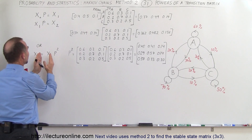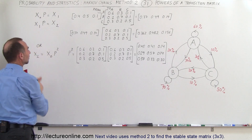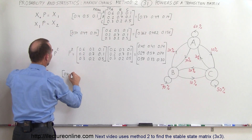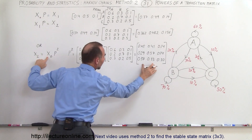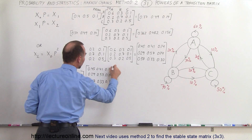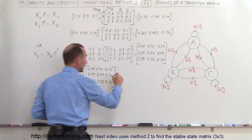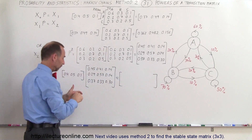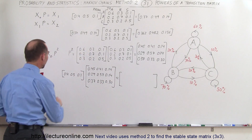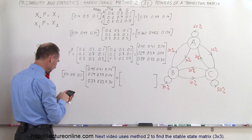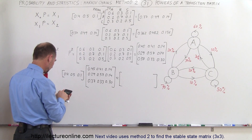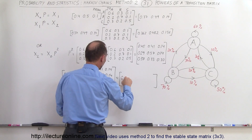Now we can show that multiplying the initial state matrix by P² gives the second state X₂. We multiply the initial matrix [0.4, 0.5, 0.1] times P². The first element is found by multiplying this row times the first column of P²: 0.4×0.45 + 0.5×0.29 + 0.1×0.37, which equals 0.362.